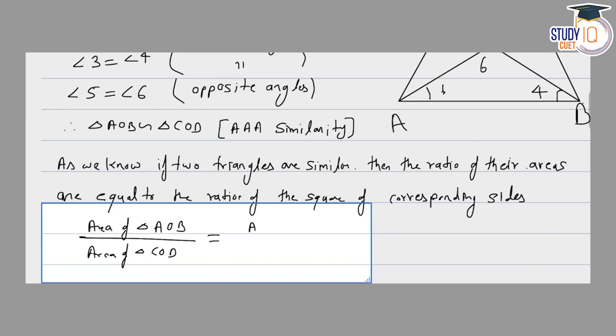This equals AB whole square divided by CD whole square. As we know, AB equals 2CD.